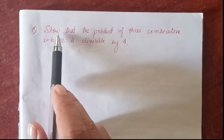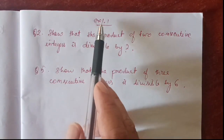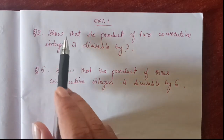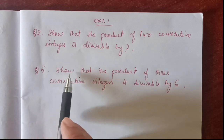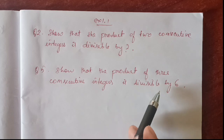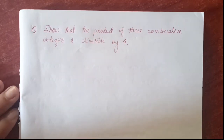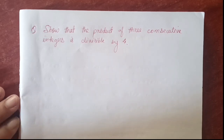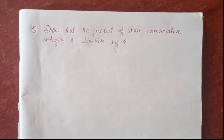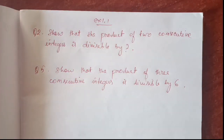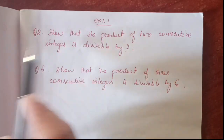Today let us learn questions like: show that the product of 3 consecutive integers is divisible by 4. This is from exercise 1.1, question number 2 and question number 5 — show that the product of 2 consecutive integers is divisible by 2, and question 5: show that the product of 3 consecutive integers is divisible by 6. After you learn this, you will find these questions are easy to calculate.